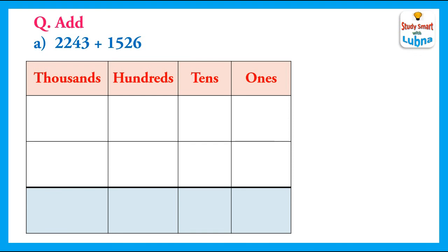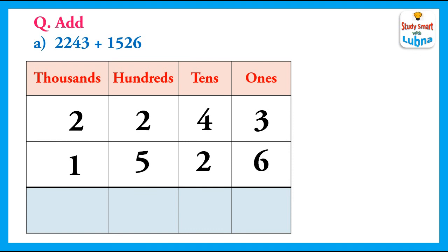The place values of 4-digit numbers are ones, tens, hundreds, and thousands. We will copy 2243 below their place value. Similarly, we will copy the other 4-digit number 1526 below their place value.